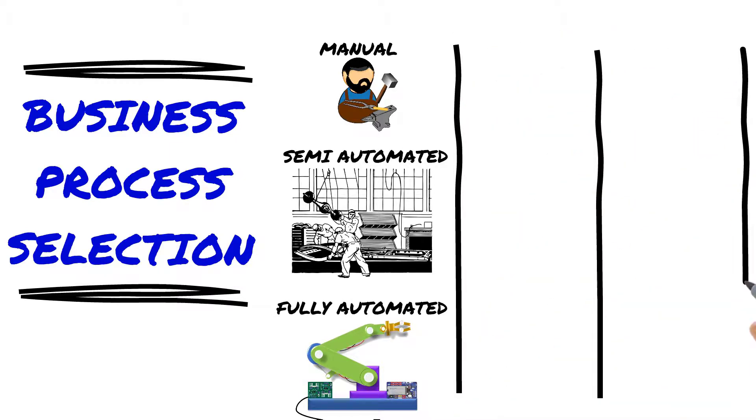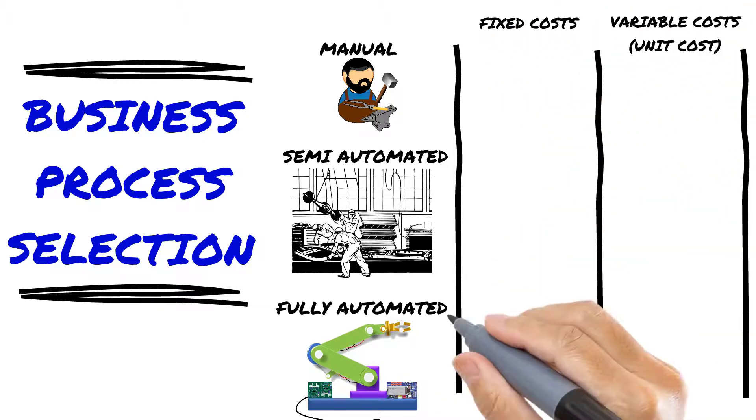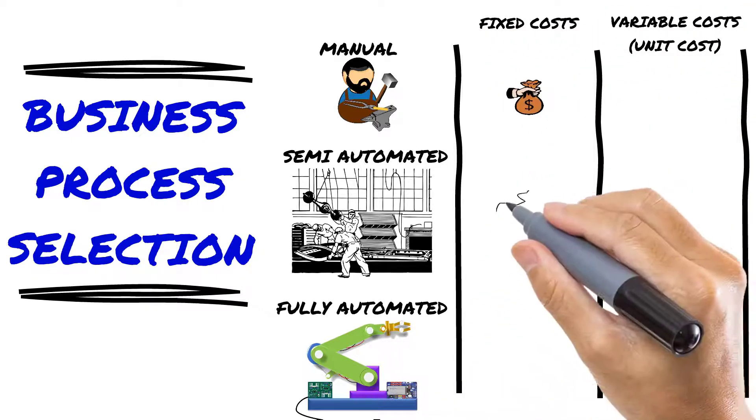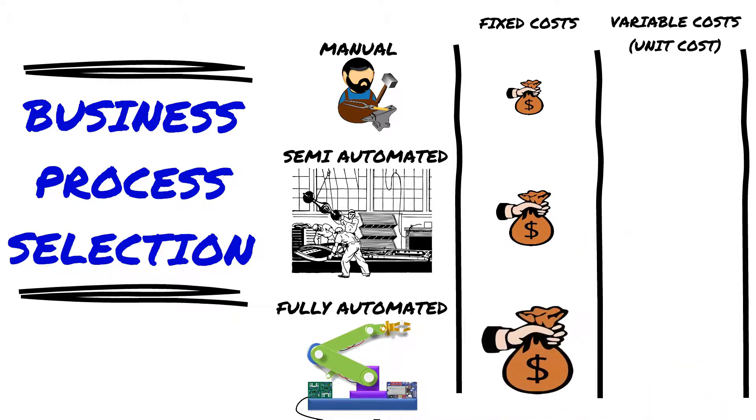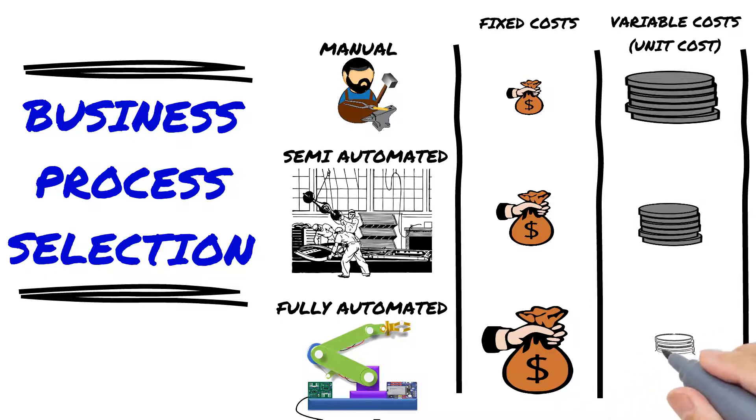The manual process has the lowest fixed cost and highest variable unit cost. On the other extreme, we have the fully automated solution that has the highest cost to be deployed, but can deliver the lowest unit production cost.